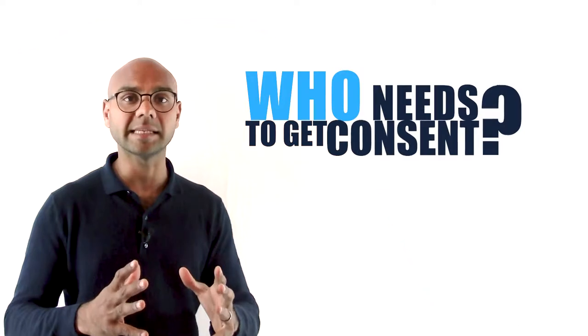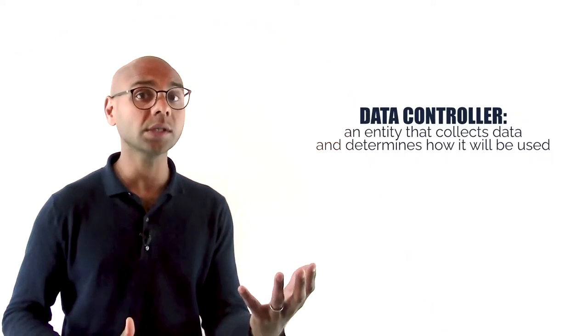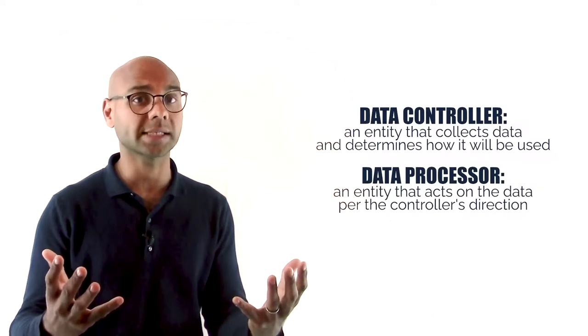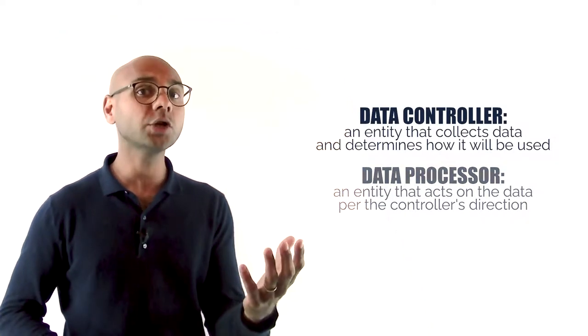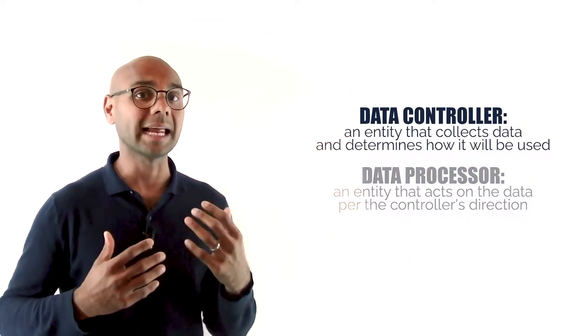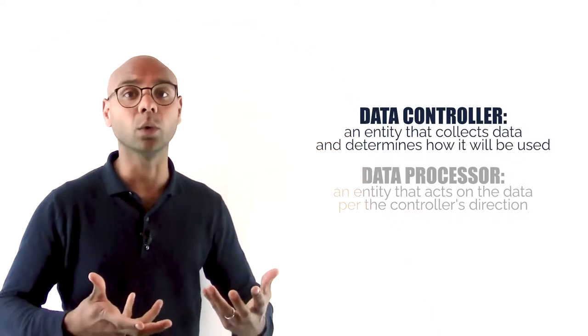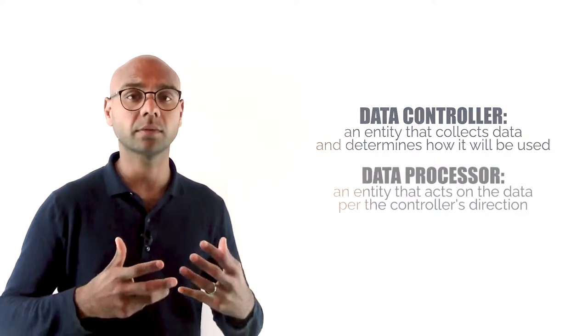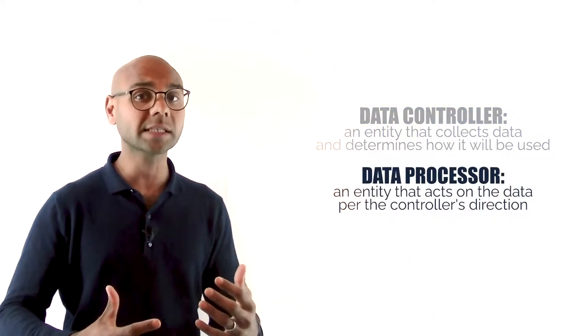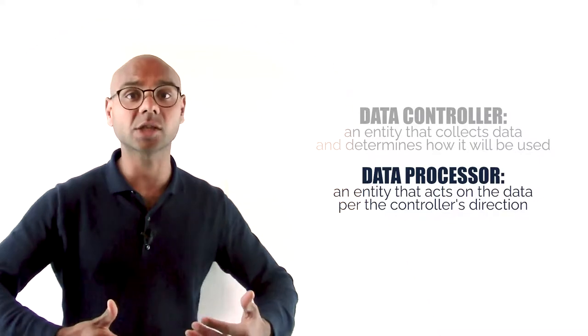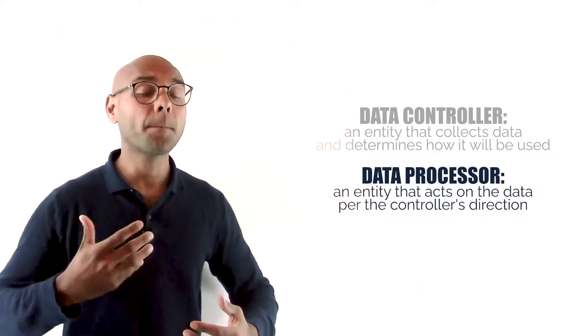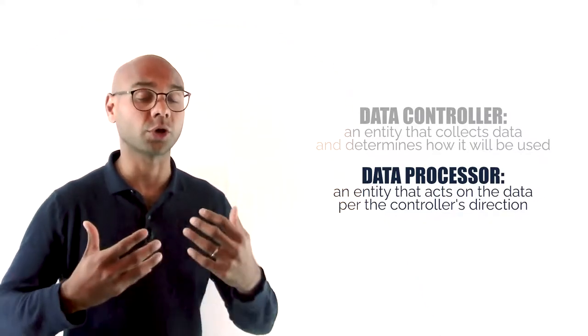Who needs to get consent and how? GDPR defines two main constituencies: data controllers and data processors. A data controller is an entity that collects the data and determines how it will be used. A data processor is an entity that acts on the data per the controller's direction.